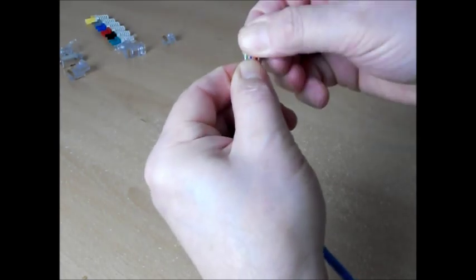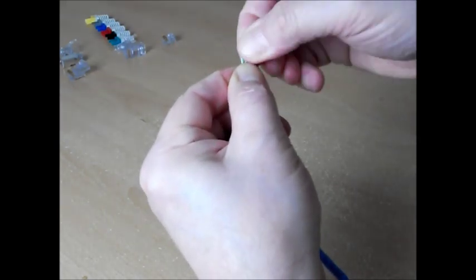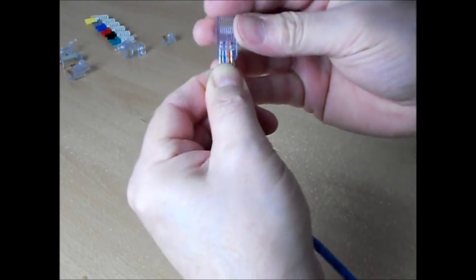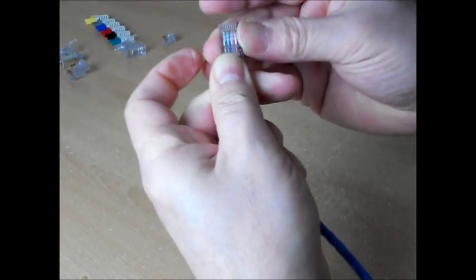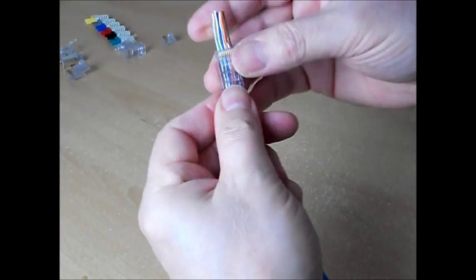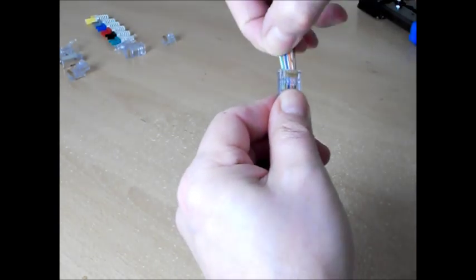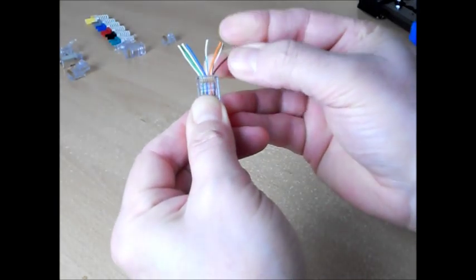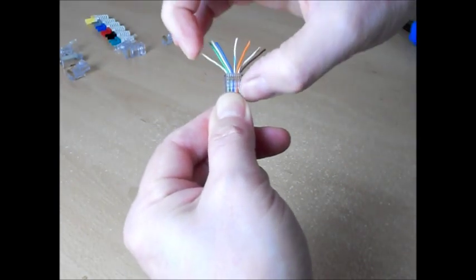Now I'm holding the cores tightly to preserve the sequence while I slide the Cat5 connector over the cores, and the cores come all the way through the connector. At this stage, I can check that the sequence is correct before I do anything that's irreversible.